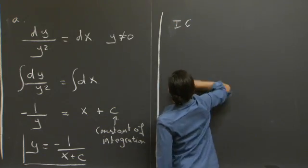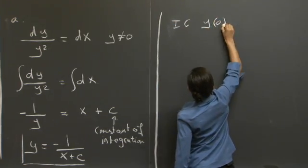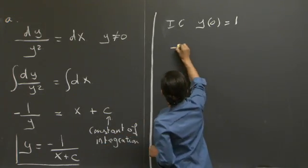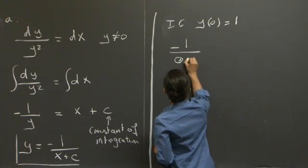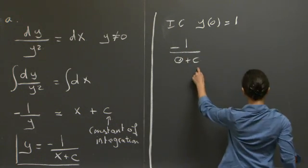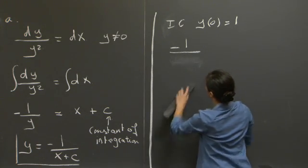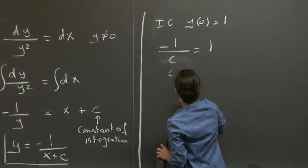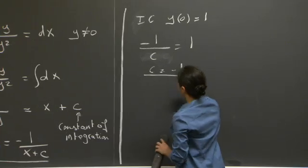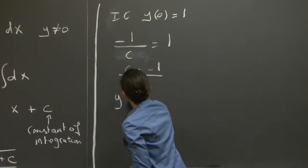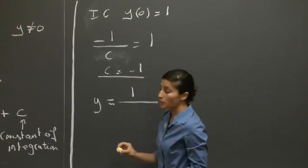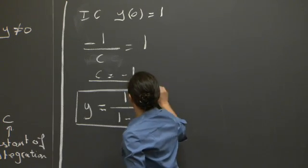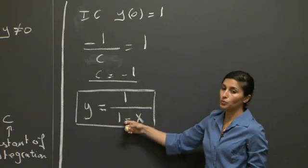Our initial condition was y(0) equals 1. If we substitute this in the expression that we just obtained, we just have 0 plus c, which equals 1 over c equals 1. So we end up with a value for our constant of integration, c equals minus 1. And so the solution to this problem is y(x) equals 1 over 1 minus x.